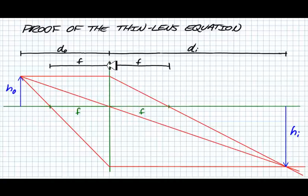The focal points are a distance f from the lens, the object is a distance dO, and the image is a distance dI. Here it is, it's upside down with a height hI. We have the three rays drawn: the parallel focus ray, the central ray, and the focus parallel ray.